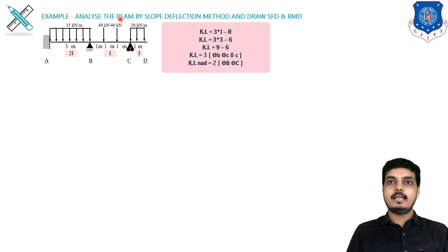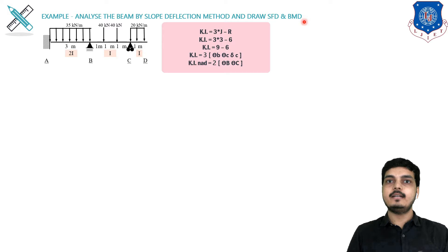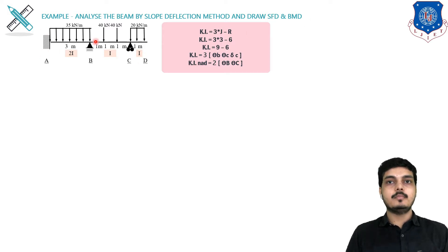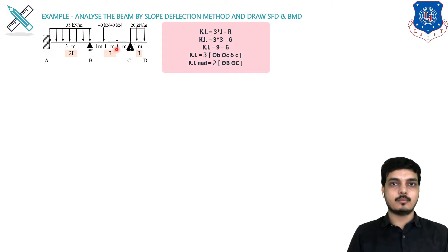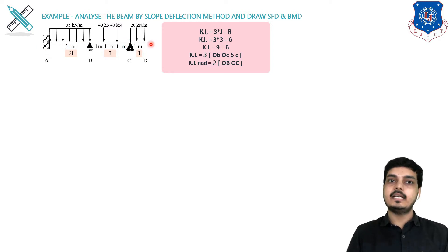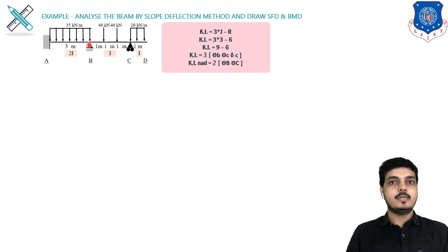The problem states: analyze the beam by the slope deflection method and draw the shear force diagram and bending moment diagram. A, B, and C supports are given but there is no support at D, so we will not be considering D. A is a fixed support, B is a hinge support, and C is a roller support. There are AB span and BC span, but CD is a cantilever. So let's find Ki.